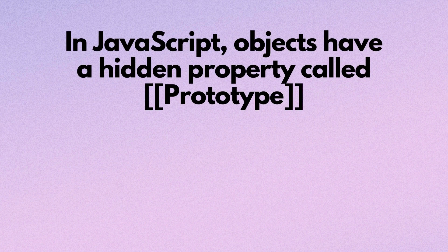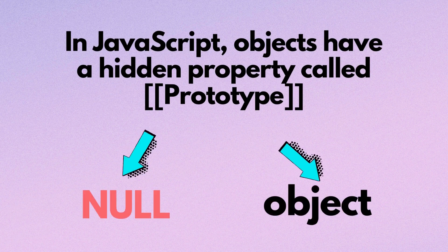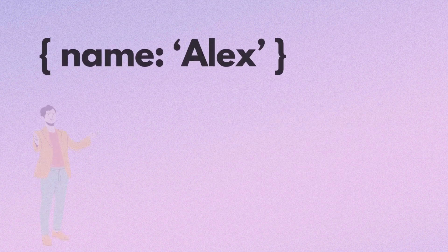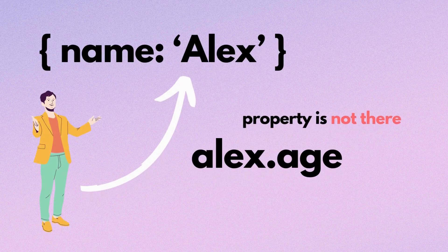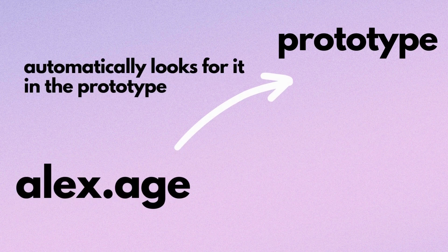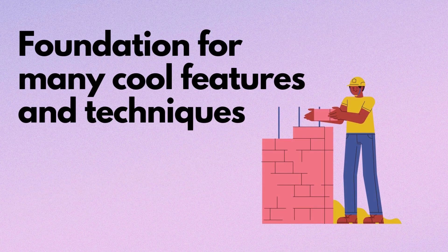In JavaScript, objects have a hidden property called prototype, which can be either null or another object. Other data types are not allowed for this property, which is a reference to the object's prototype. When we try to read a property from an object and it's not there, JavaScript automatically looks for it in the prototype. It's the foundation for many cool features and techniques in programming.